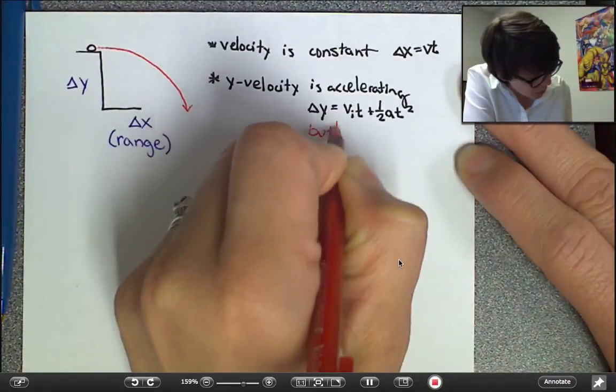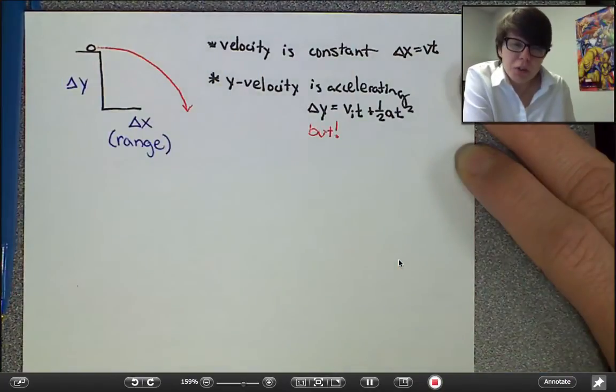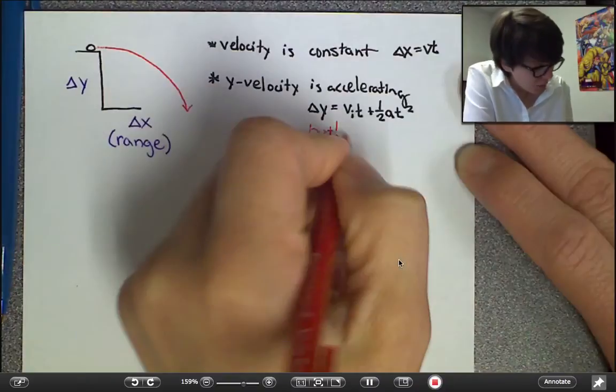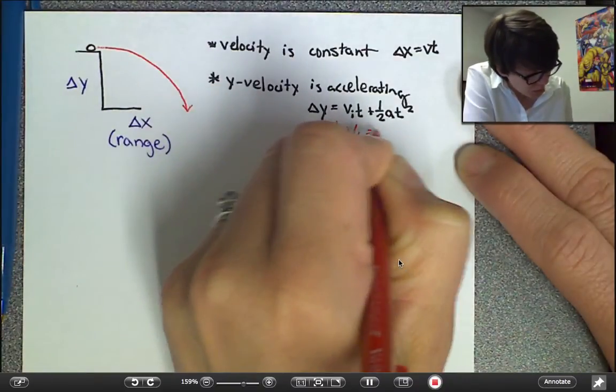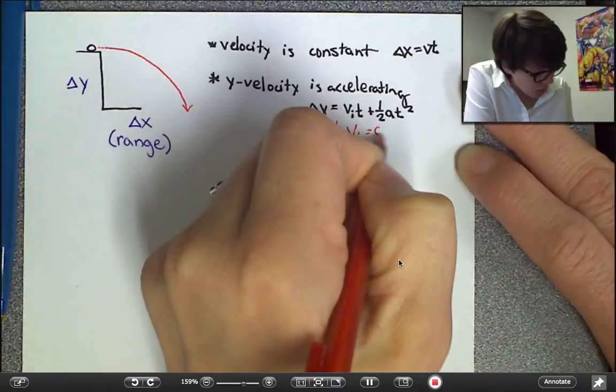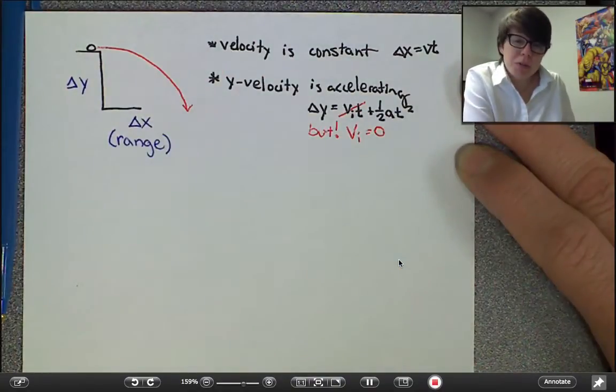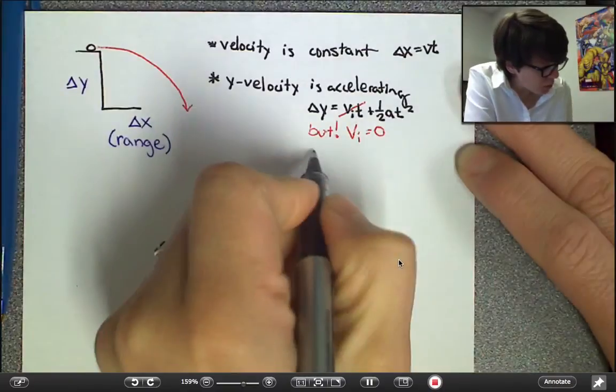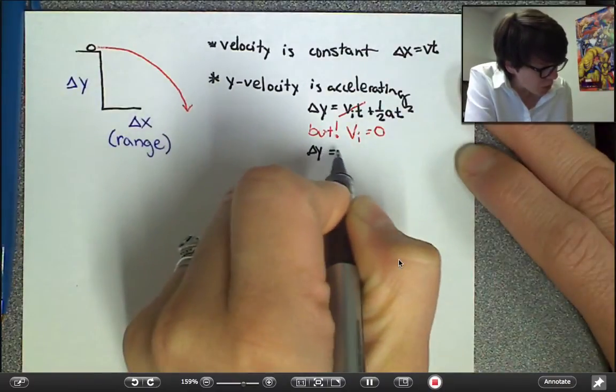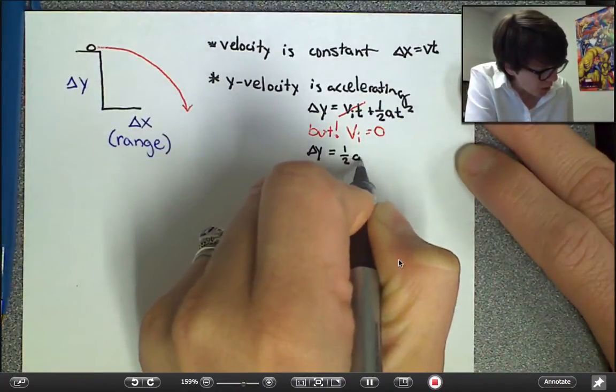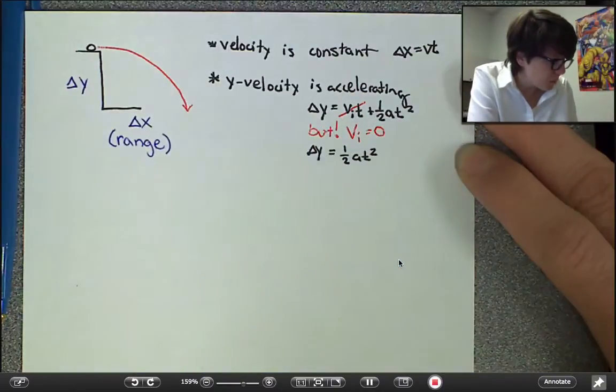But, let's add this here in another color, the vertical velocity initially is zero, making this entire first term disappear from the equation. So, effectively, you're going to work with the change in height is a half at squared.